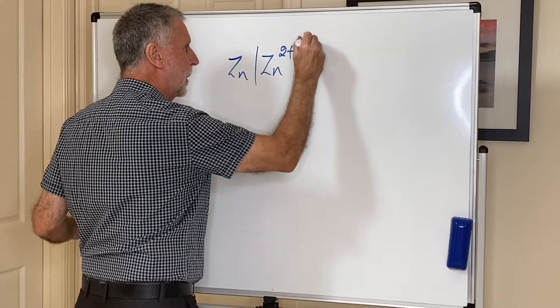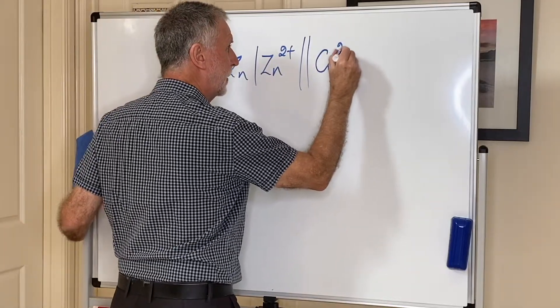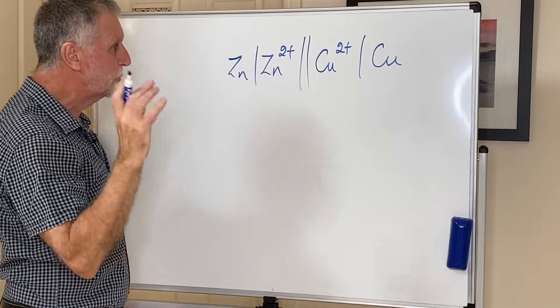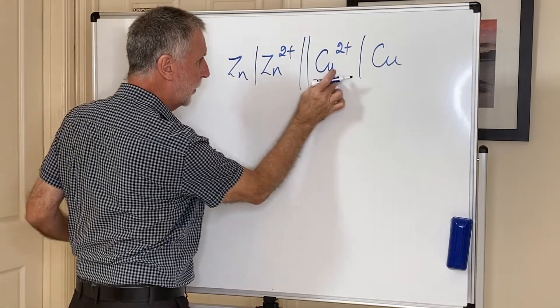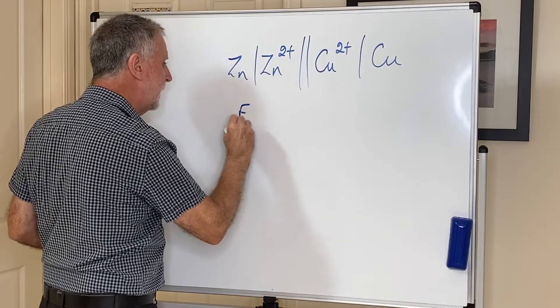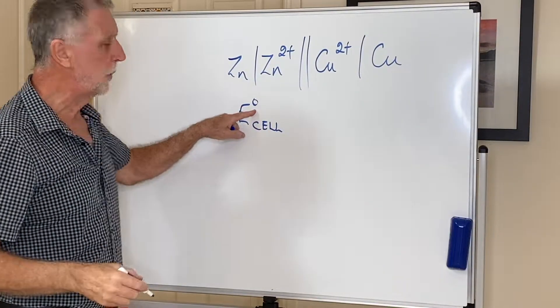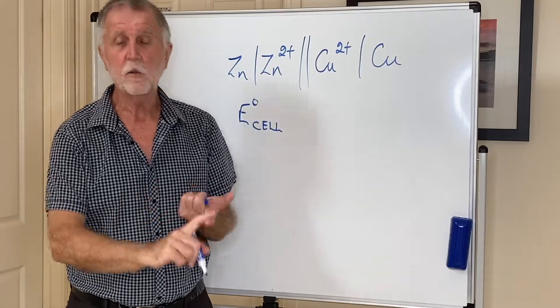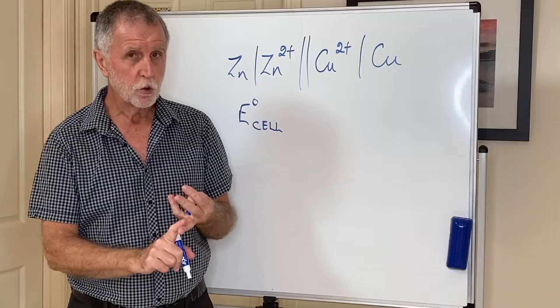You start with the reducing agent, which is zinc, and you put a line between it and what it becomes. You then put a double line to represent the salt bridge, and then the copper ion becoming reduced to copper. So what this reads now is zinc turns into zinc ions, copper ions become copper. If you do that, then the E of the cell—that little circle by the way is used to represent standard conditions, which in this case would be 25 degrees C, atmospheric pressure, and all solutions one mole per liter.